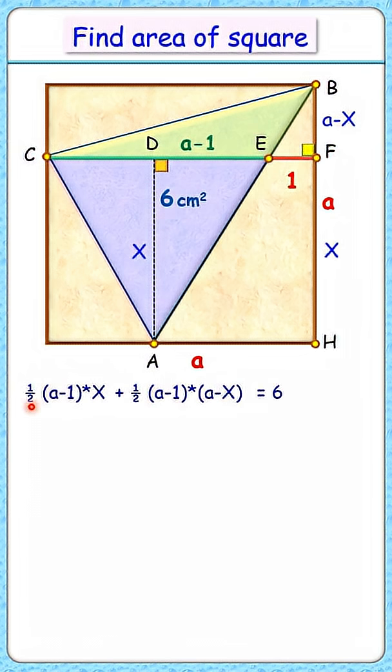Solving it, let's take half of (a minus 1) common. Inside will be x plus (a minus x). The x will get cancelled here, and solving this equation by opening the brackets, we get it as a quadratic in terms of a.